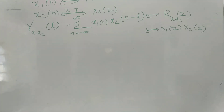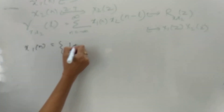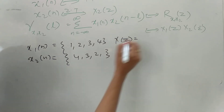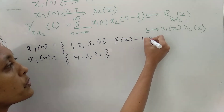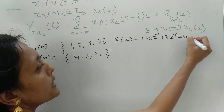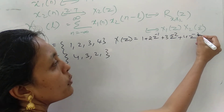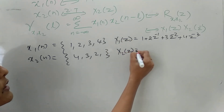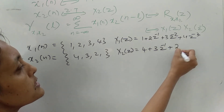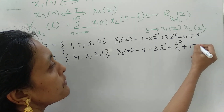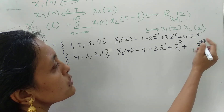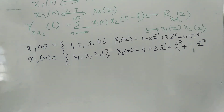For example, X1 of N equals {1, 2, 3, 4} and X2 of N equals {4, 3, 2, 1}. We write X(Z) as 1 plus 2Z raised to minus 1, plus 3Z raised to minus 2, plus 4Z raised to minus 3. For X2, since no center is given, we take the first one as 4 into Z raised to minus 3, and you can multiply accordingly.